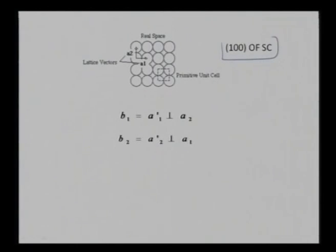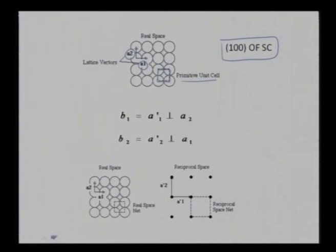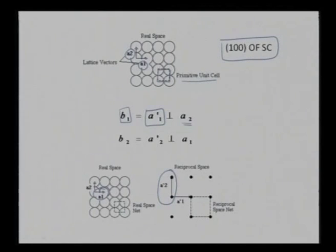Let me come back to the 1 0 0 plane of a simple cubic. In real space I have vector a₁ and vector a₂, forming a primitive unit cell. Coming to my reciprocal lattice, b₁ is perpendicular to a₂, and I can also give it as a₁'. My a₁' is perpendicular to a₂, and my a₂' is perpendicular to a₁. I can see that a₁ was out here and a₂' is perpendicular to a₁ — that is what I am seeing here.